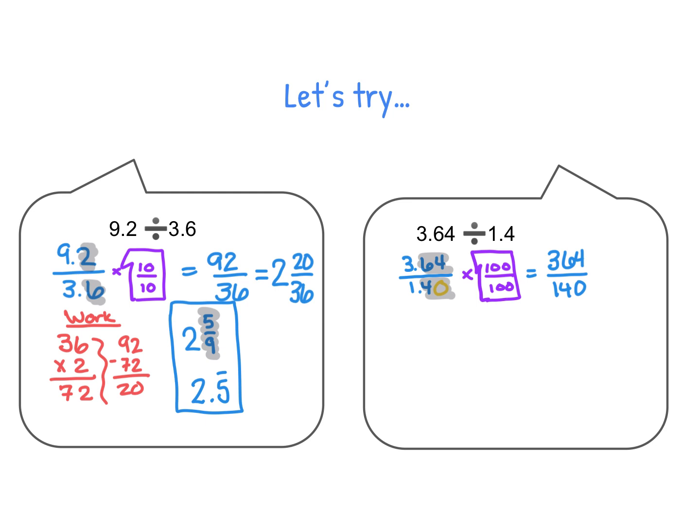This ends up giving us 364 all over 140, which is great because now we can use the same process we used before. We can simplify before we get to the point of long division. I want to make a guess that 140 times 2 is going to get me as close as I can get. So 140 times 2 is going to be 0, 8, and 2. So that's pretty close. So I think it's going to be 2, and then, of course, we need to figure out what we have left over.